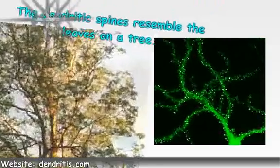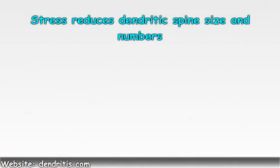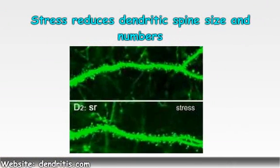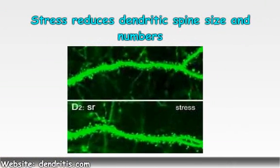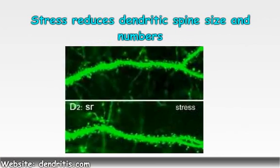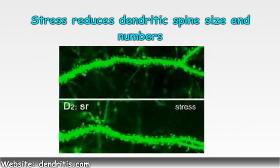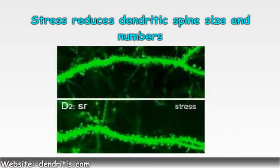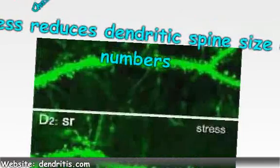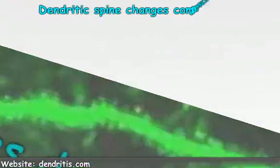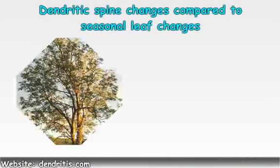The dendritic spines are plastic, or continually changing shape, and can become more dense or less dense in a matter of hours. This photograph shows how stress reduces dendritic spine numbers. The reduction of dendritic spine numbers may be compared to the reduction of leaves on a tree from summer to winter.